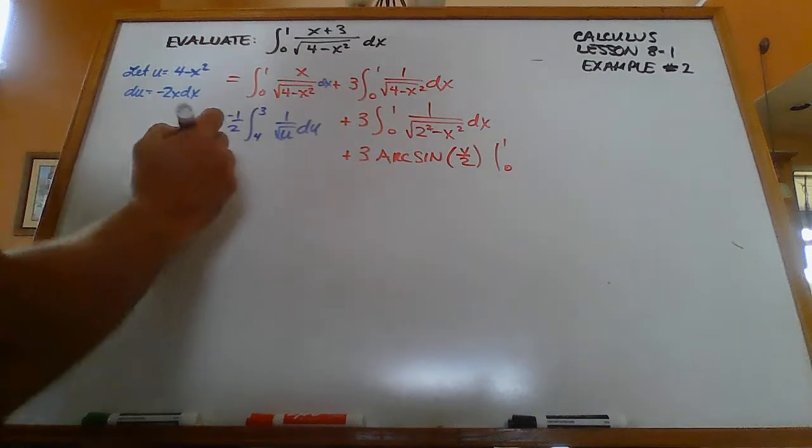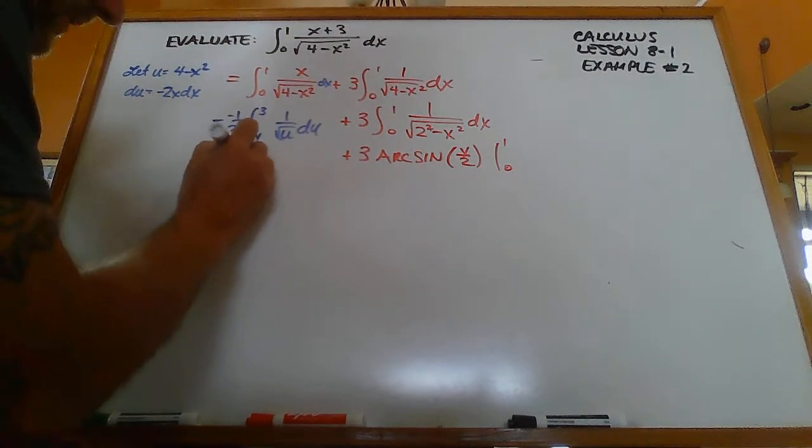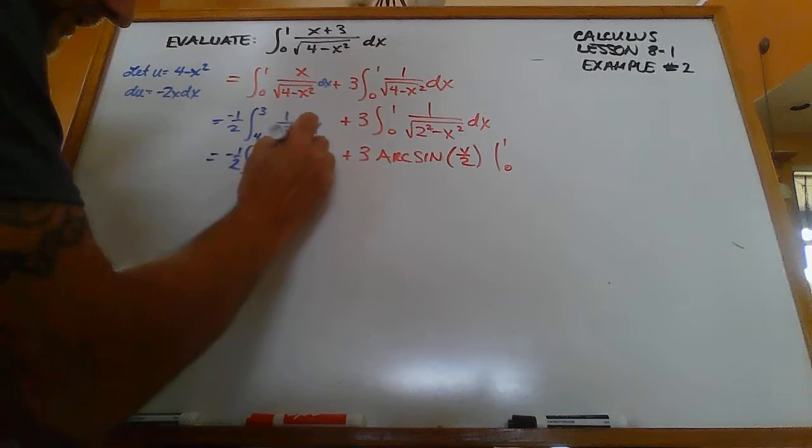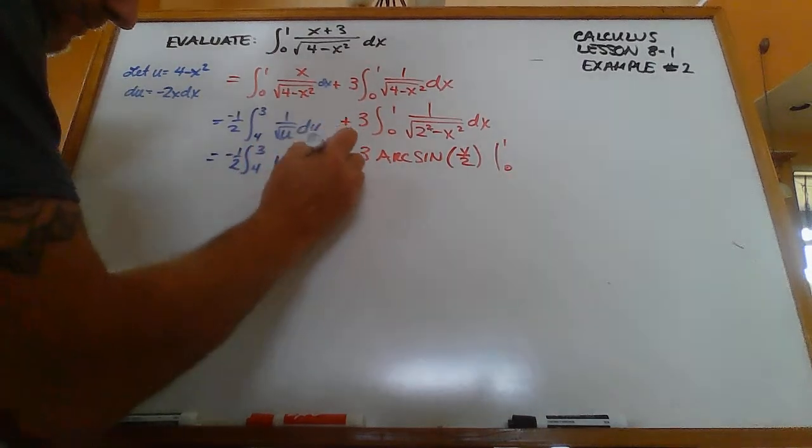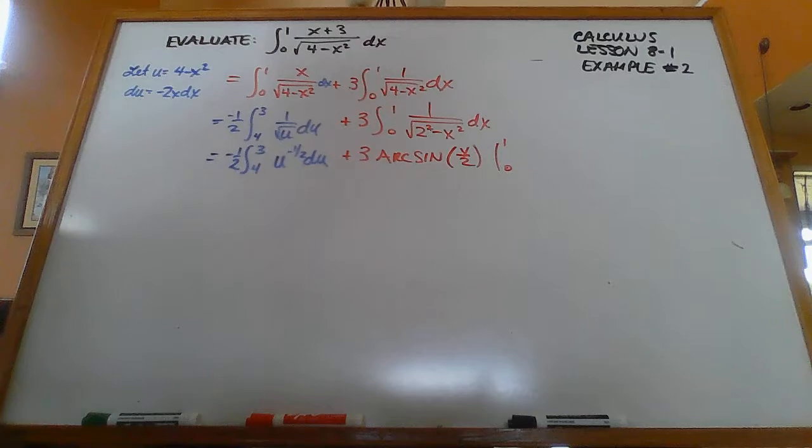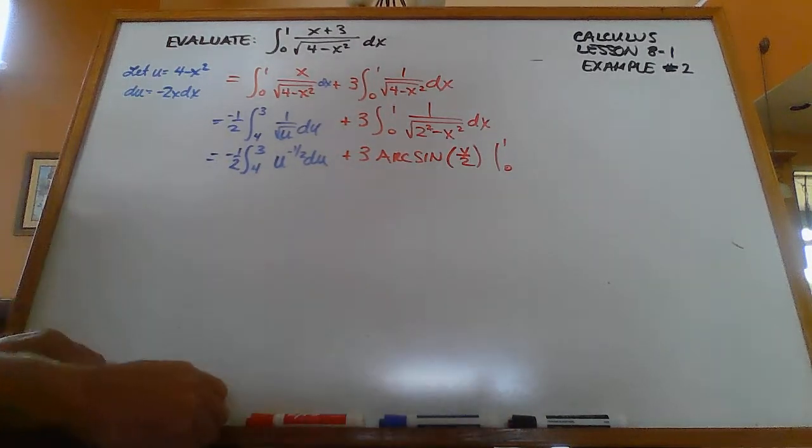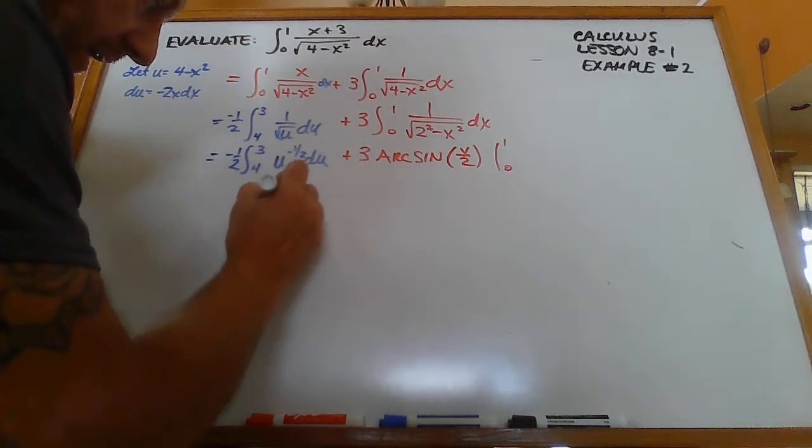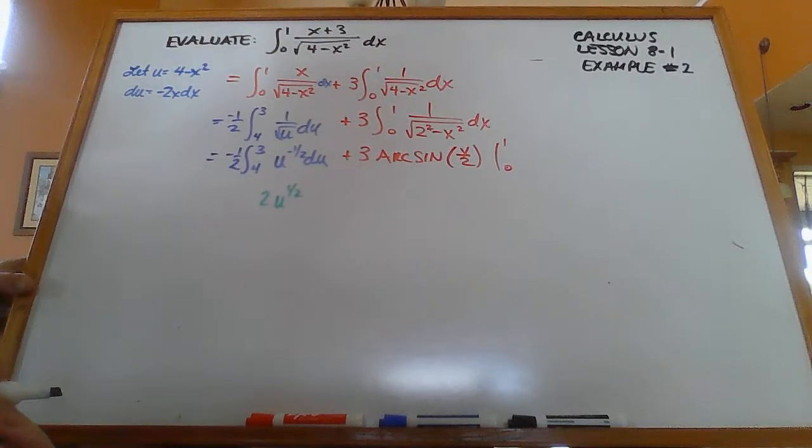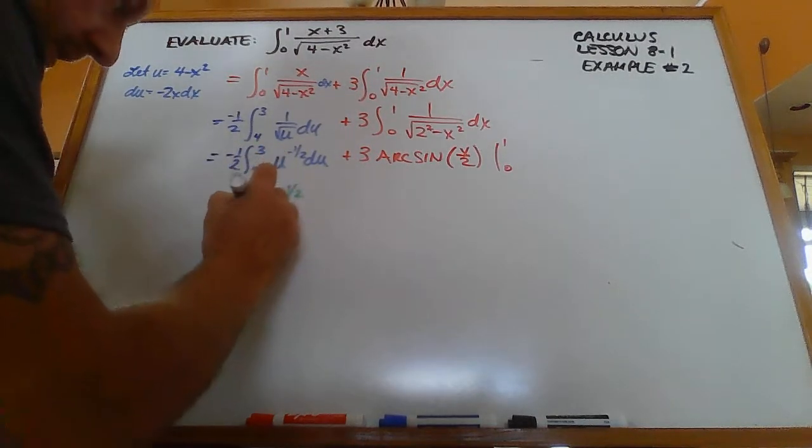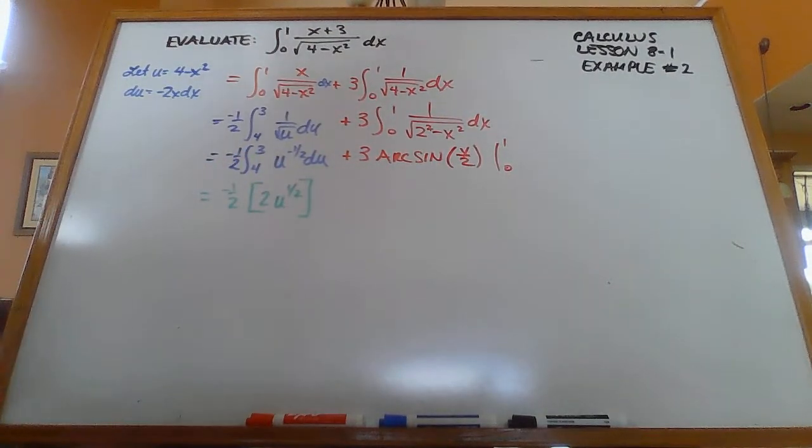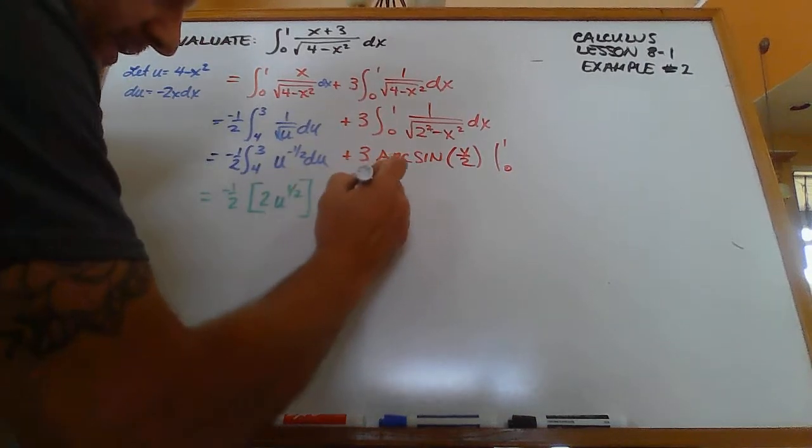So then I can rewrite this as u to the negative 1 half du. We can integrate the first part of this thing. It's going to be u to the 1 half, and we're going to need a 2 out there in front. And then that's times negative 1 half. And then this part over here is done already.